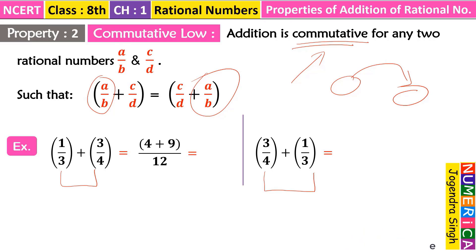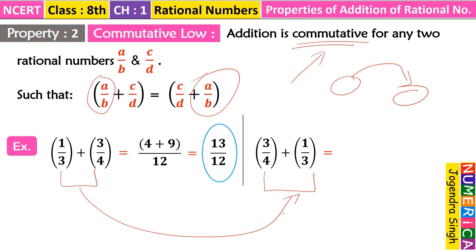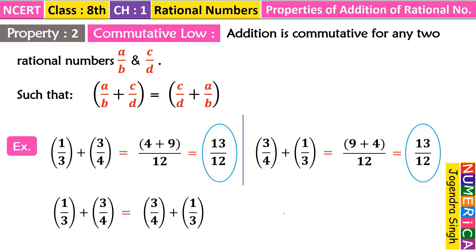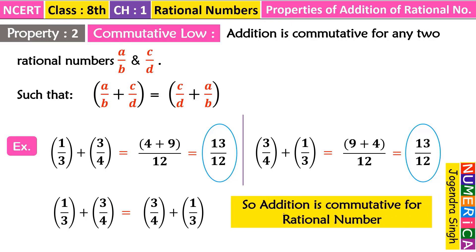We add 1/3 + 3/4. After taking LCM we get (4 + 9)/12 = 13/12. Now after commuting, we swap the order: 3/4 + 1/3. After taking LCM we get 12 in the denominator and in the numerator 9 + 4 = 13/12. So we can write 1/3 + 3/4 = 3/4 + 1/3. We can say that addition is commutative for rational numbers.